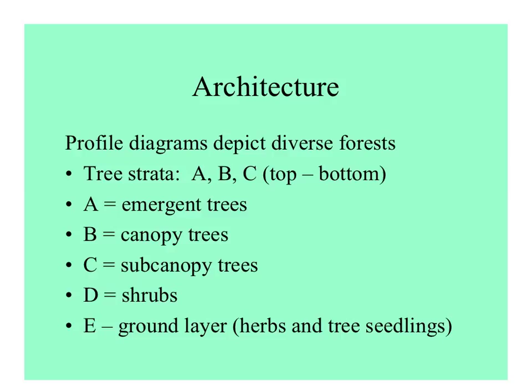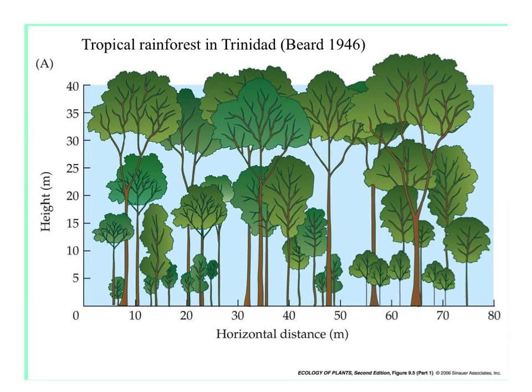B are the canopy trees. C the sub-canopy trees. D the shrubs — woody plants closer to the ground. And E the ground layer, which includes herbaceous plants and also the younger versions of shrubs and trees. Here's a profile diagram of a typical tropical rainforest — this one in Trinidad.